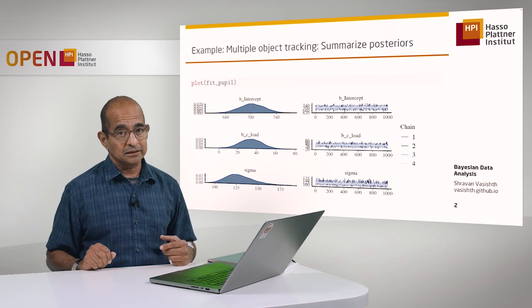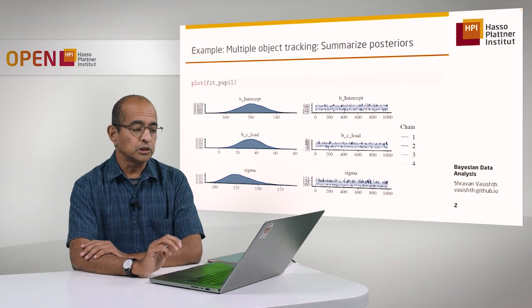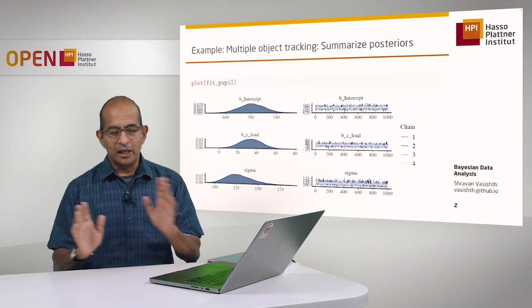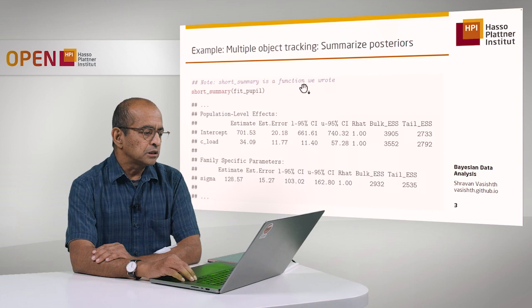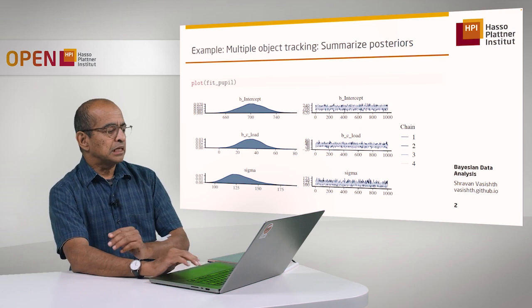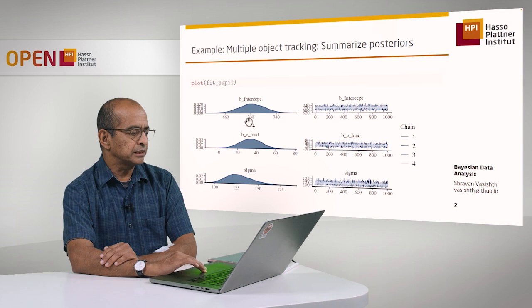If you didn't have these chains sitting on top of each other, that would indicate some problems with convergence. There are examples of non-convergence in the textbook and we explain how to deal with that. But right now I'm only showing you well-behaved models. Usually what we do in a paper is we don't show the chains — one just shows the posterior distributions of the parameters and perhaps also a table that summarizes the results.